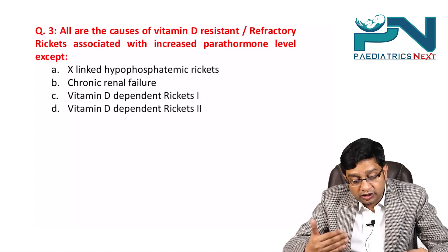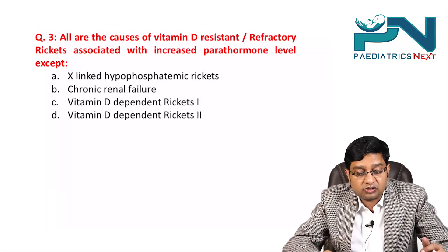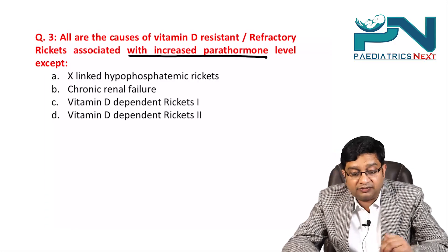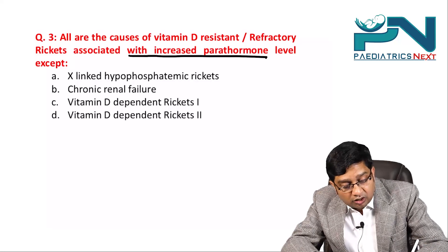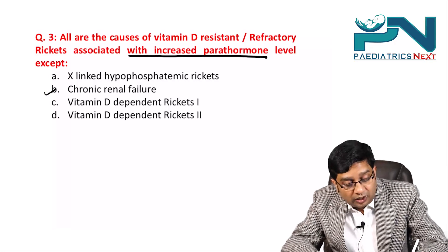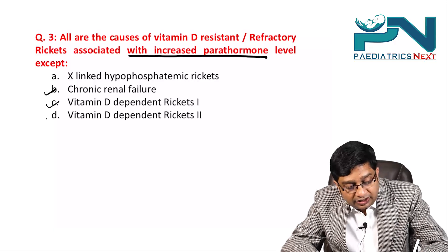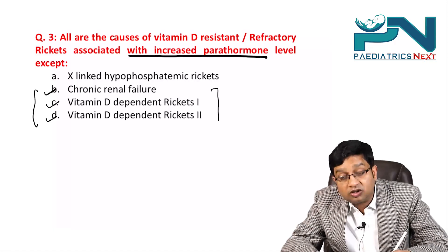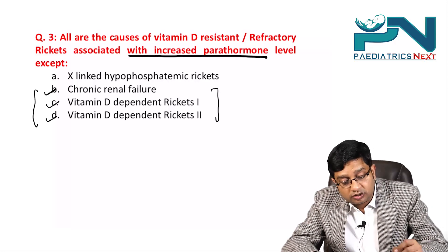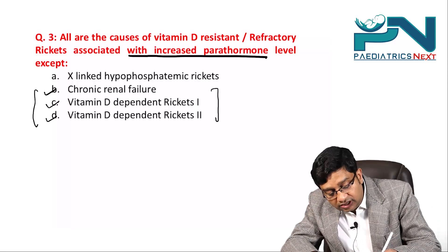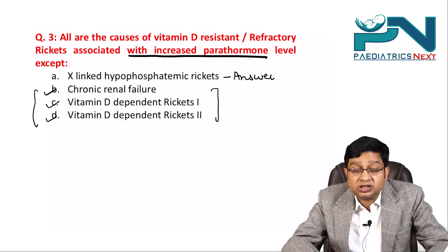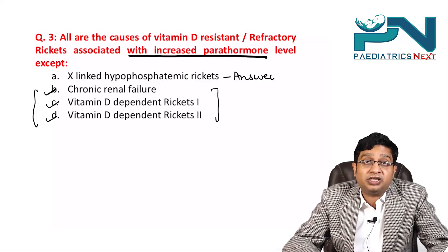Question 3 is based on the same explanation. All are causes of vitamin D resistant rickets associated with increased PTH level — remember chronic renal failure, vitamin D dependent rickets type 1, and vitamin D dependent rickets type 2. If the question asks 'except,' the answer is X-linked hypophosphatemic rickets, because it has normal PTH level.